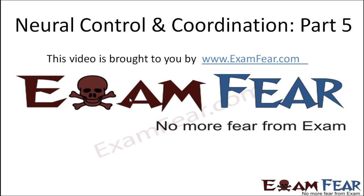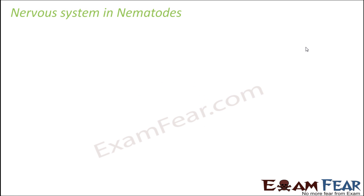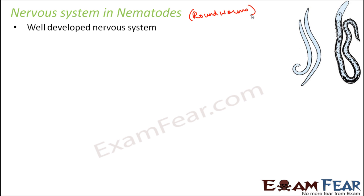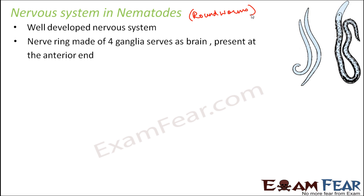This video on neural control and coordination part 5 is brought to you by examfear.com. Moving a little higher in the animal kingdom, we have the nematodes, also known as the roundworms. Examples of nematodes include Ascaris. They have a better developed nervous system compared to the platyhelminthes.